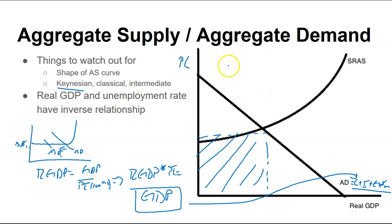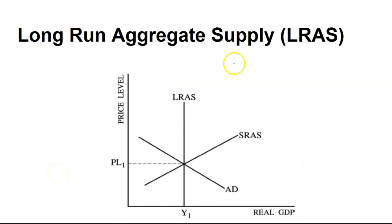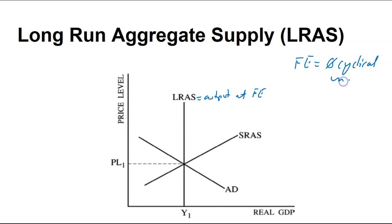Real GDP and unemployment have an inverse relationship. So if I'm at real GDP X and for some reason I go to real GDP Y, since more stuff is being produced, I would have a lower level of unemployment — if you produce more, you probably need more people working. The LRAS is the output at your full employment. Full employment is when you have zero cyclical unemployment — you have the other types but zero cyclical. It is when you have your natural rate of unemployment, which is the same thing as full employment.